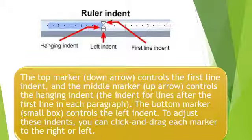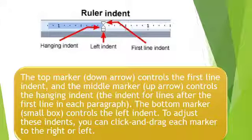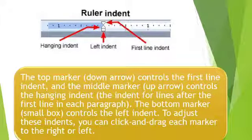As you can see in the figure, there are three types of indent: hanging indent, left indent, and first indent. The top marker controls the first line indent, the middle marker controls the hanging indent, and the bottom marker controls the left indent. To adjust these indents, you can click and drag each marker to the right or left.